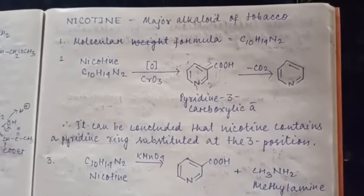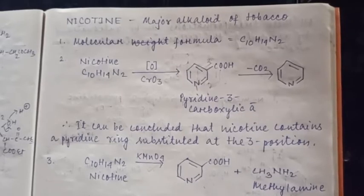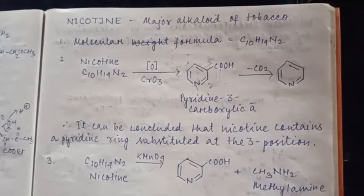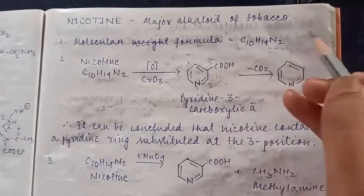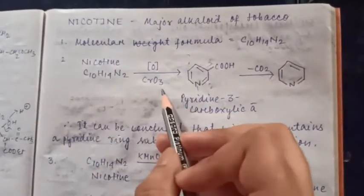Already in the last class we have discussed about hygrine and we have seen the structure elucidation of hygrine and synthesis. So today we will start with structure elucidation of nicotine. By experiments it is seen that the molecular formula of nicotine is C10H14N2, and nicotine upon oxidation forms many fragments.